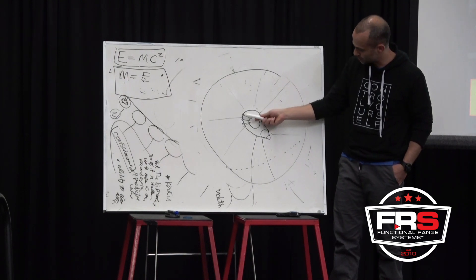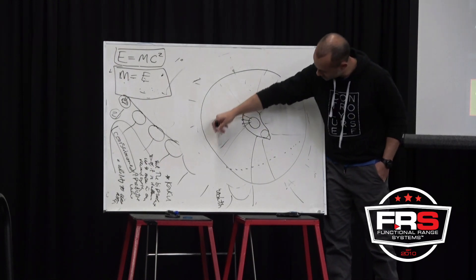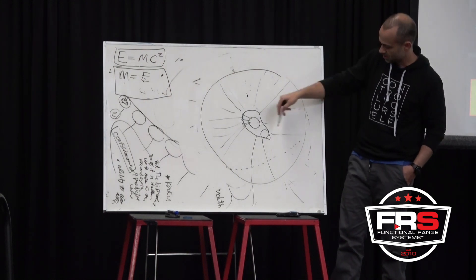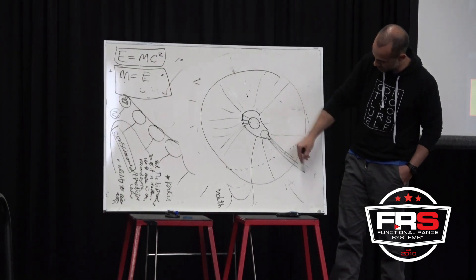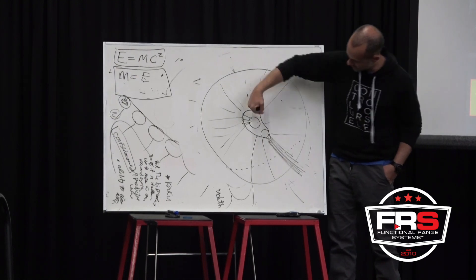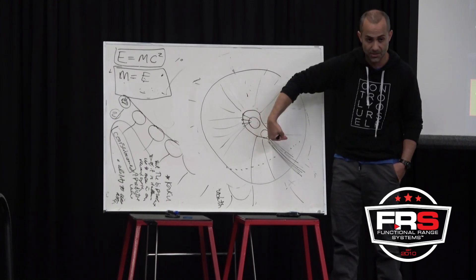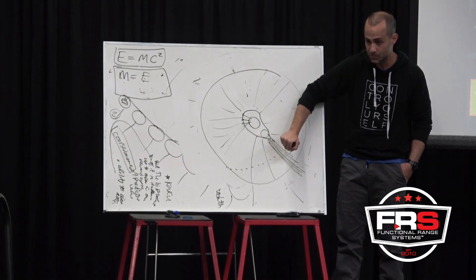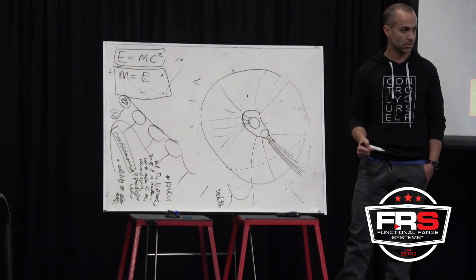So here, I have options where I can dissipate force over a variety of different lines. Here, I have no option. Whenever this head moves into that area of the space, this is the tissue that is going to be absorbing the force. You don't have a choice.